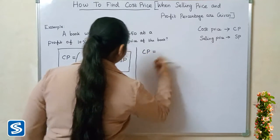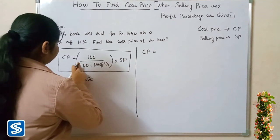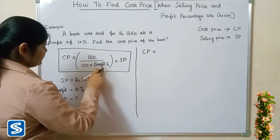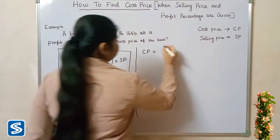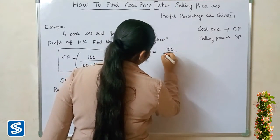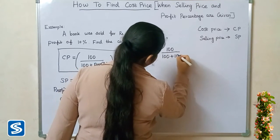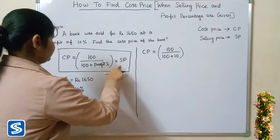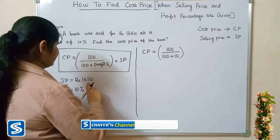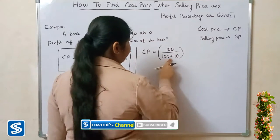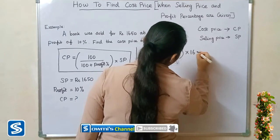Cost price is equal to 100 divided by (100 plus profit percentage). Here profit percentage is 10, so it becomes 100 divided by (100 plus 10), multiplied by the selling price of rupees 1650.